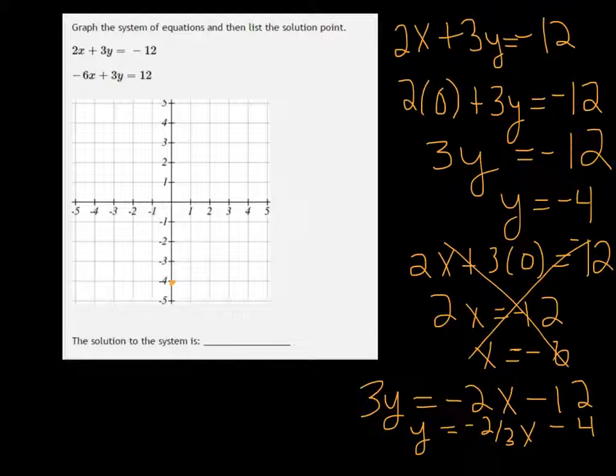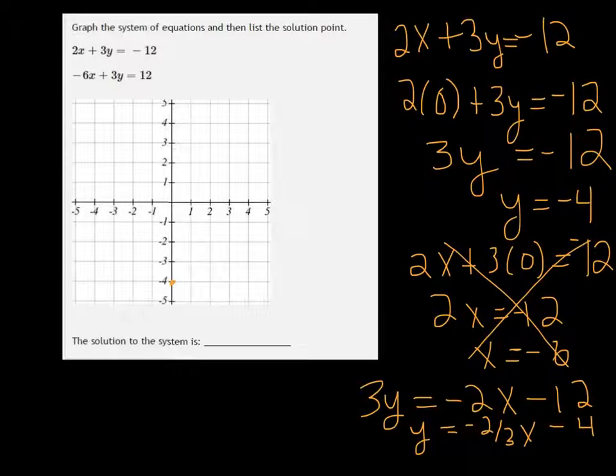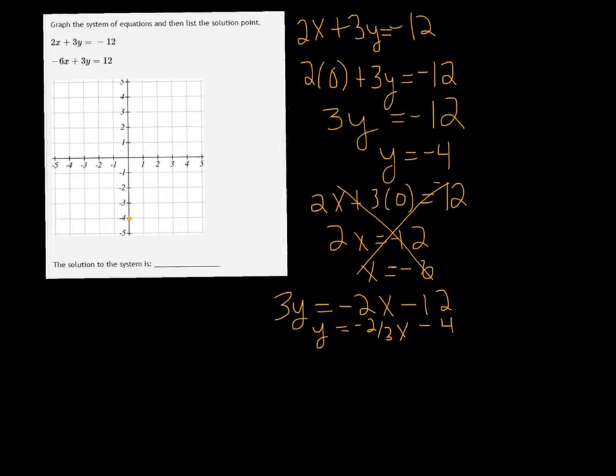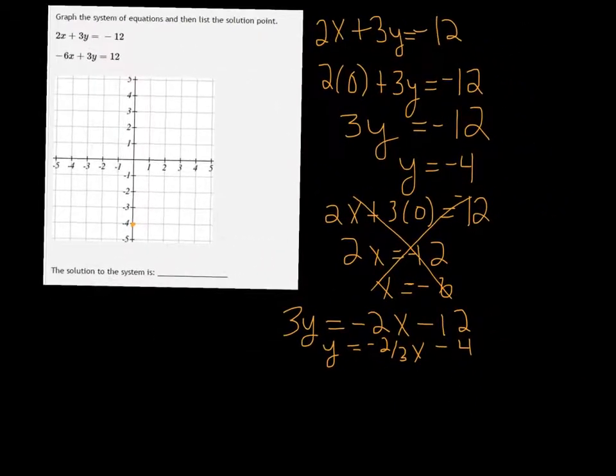So I see that the values that I pick for x, I'm going to want them to be multiples of 3, because if I put in a multiple of 3, then I'm going to get rid of that fraction.